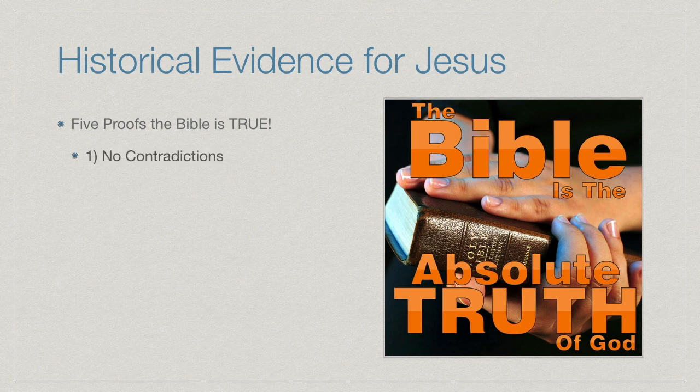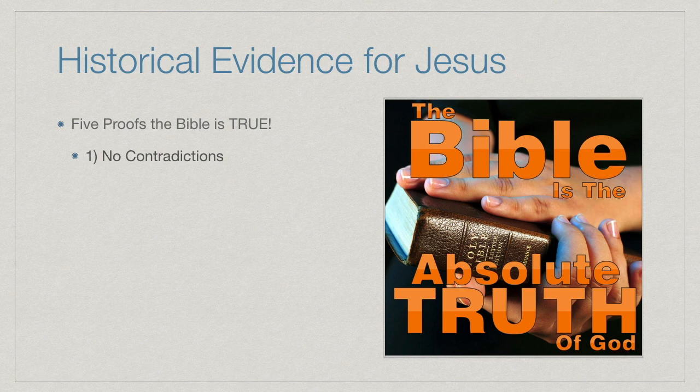There are five proofs that the Bible is true. Number one: there are no contradictions. You'll see that when the Bible is shared, there are no contradictions between the New Testament and the Old Testament, or among the synoptic Gospels. Things might seem to contradict one another, but the story is clearly there — the events are true, and the details for all those things are present. It's a very important point that there are no contradictions in the Bible.